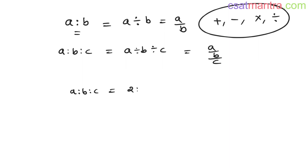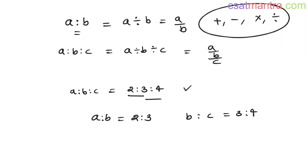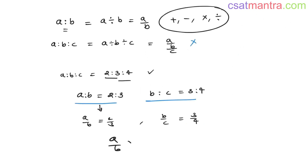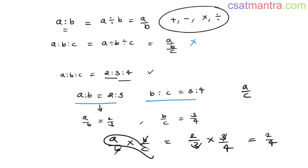Say A is to B is to C as 2 is to 3 is to 4. From this you can say A and B are in the ratio 2 is to 3, and B and C are in the ratio 3 is to 4. You can write A by B as 2 by 3 and B by C as 3 by 4. Multiplying: A/B × B/C = 2/3 × 3/4, the B's and 3's cancel, giving A by C as 2 by 4.